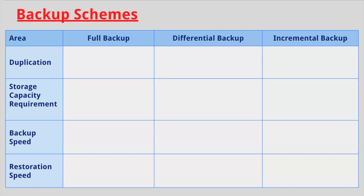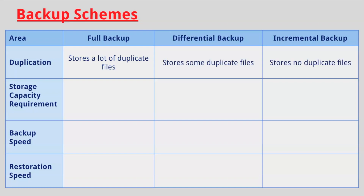Now we're going to compare the different areas amongst full, differential, and incremental backups. Starting with duplication: full backup stores a lot of duplicate files, a differential backup stores some duplicate files, and an incremental backup stores no duplicate files. For storage capacity requirement: full backup has the highest, differential backup has a medium capacity requirement, and incremental backup has the lowest. For backup speed: full backup has the slowest, differential backup has a medium backup speed, and incremental backup has the fastest backup speed.